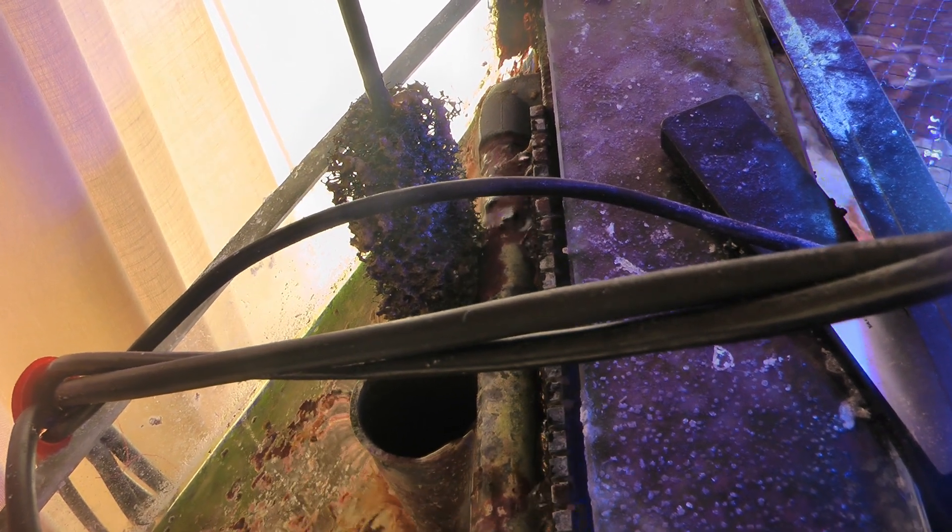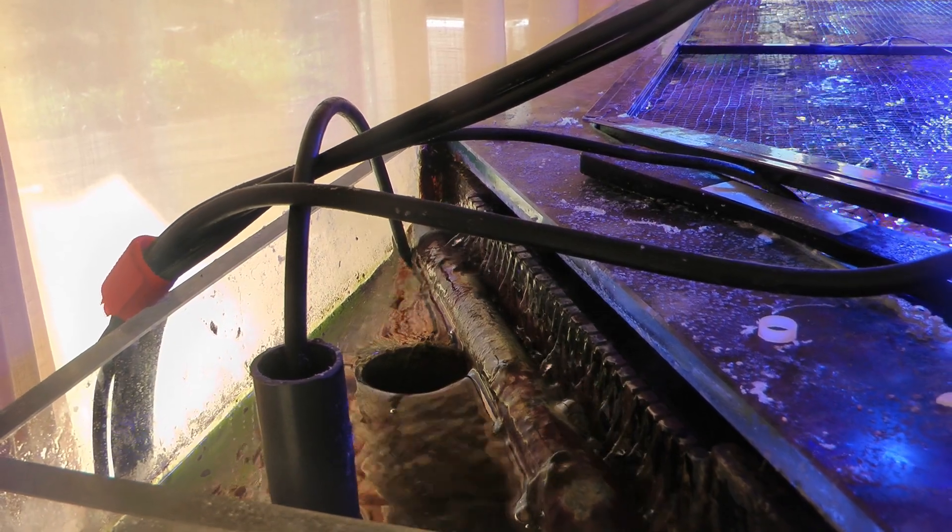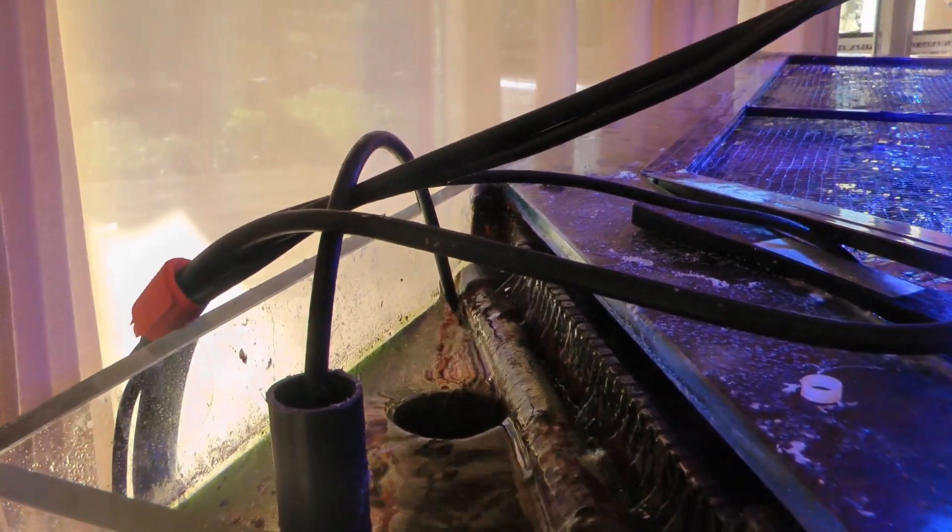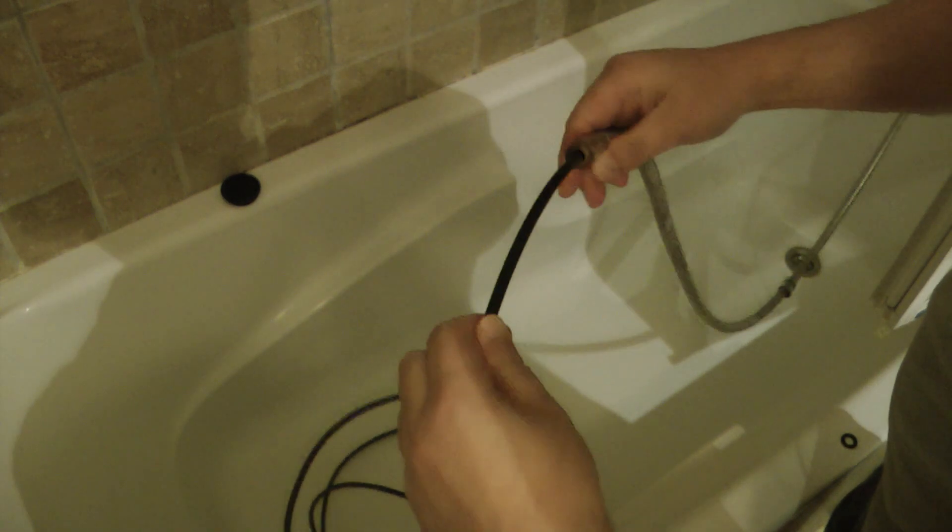I first tried a transparent airline tube, but it grew algae inside quickly, and it clogged. Since I changed it to a black tube, I haven't had any clogging problems, and it just takes a couple of minutes to clean it, every 3 months or so, with a shower hose.